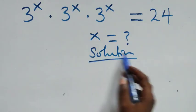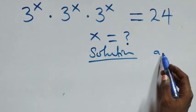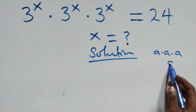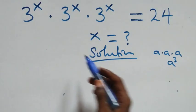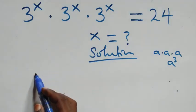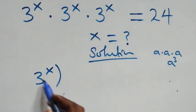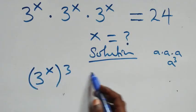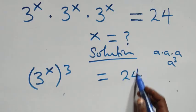What we have here: this follows when we have a times a times a, which can be written as a raised to the power 3. With this same thing multiplying, we can write this as 3 raised to power x, then 4 raised to power 3, equals to 24 on this side.